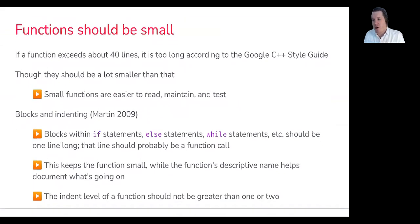First and foremost, functions should be small. If a function exceeds about 40 lines, it's too long, according to the Google C++ style guide. For the purposes of this course, I'd probably go even smaller than that. So as you're writing your functions, if you find that they're going over, there's a lot of vertical lines there, do take a step back and question whether or not you could partition that up into multiple functions. One of the rationales for this is that smaller functions are easier to not only read, but also to maintain and test.